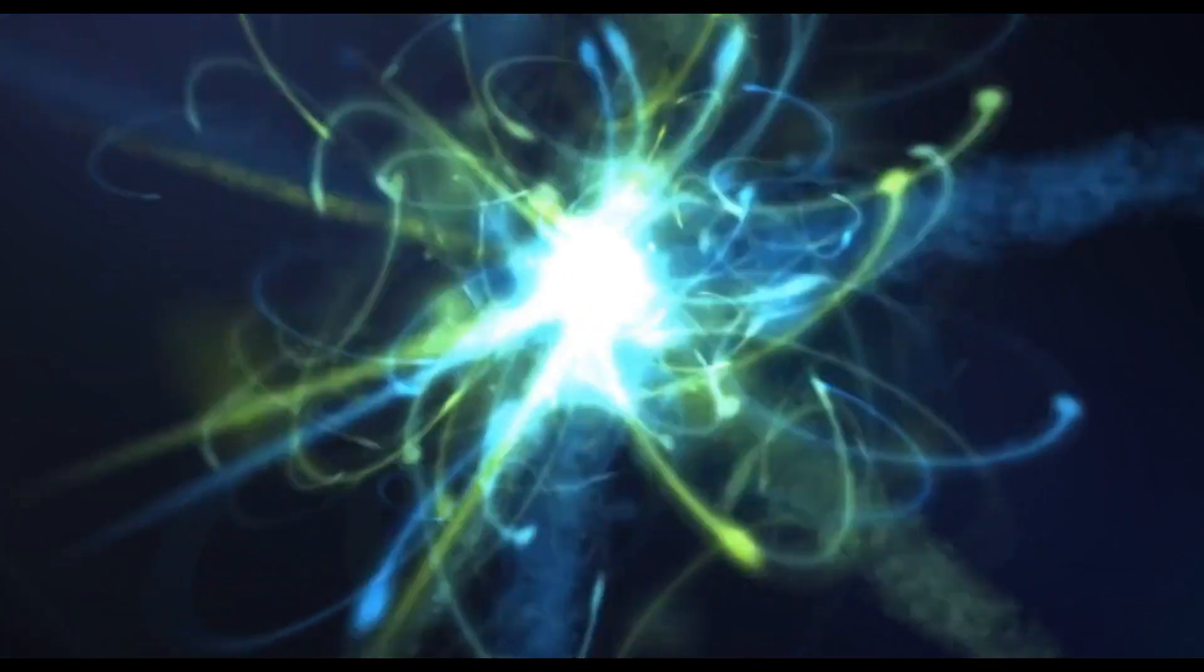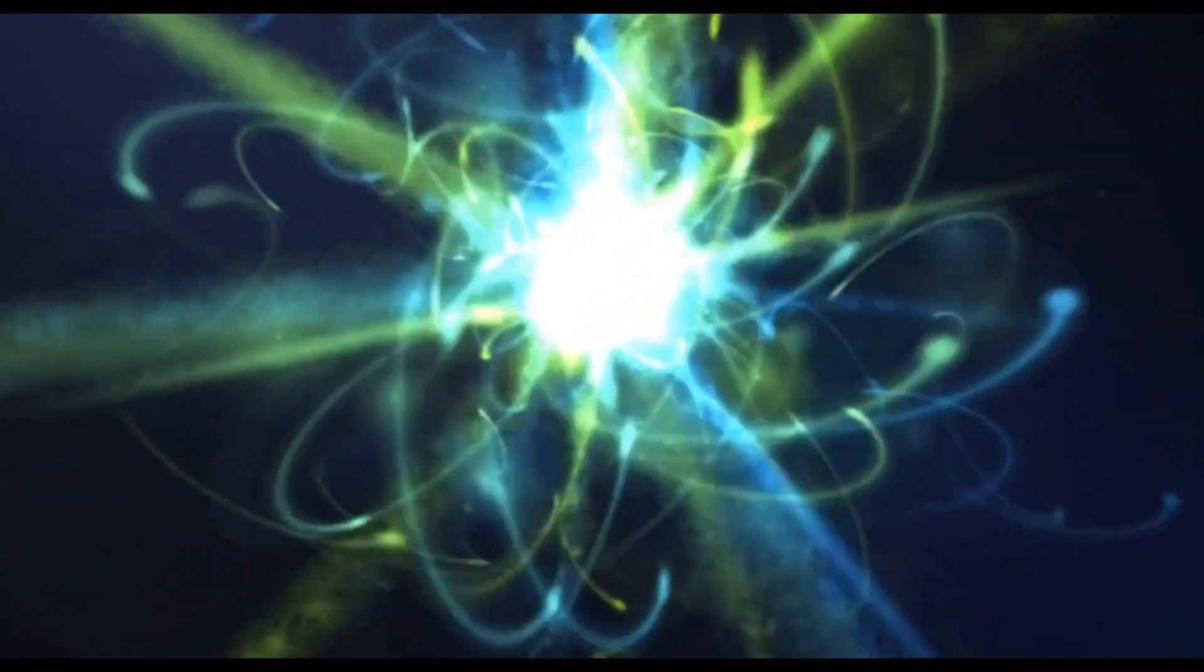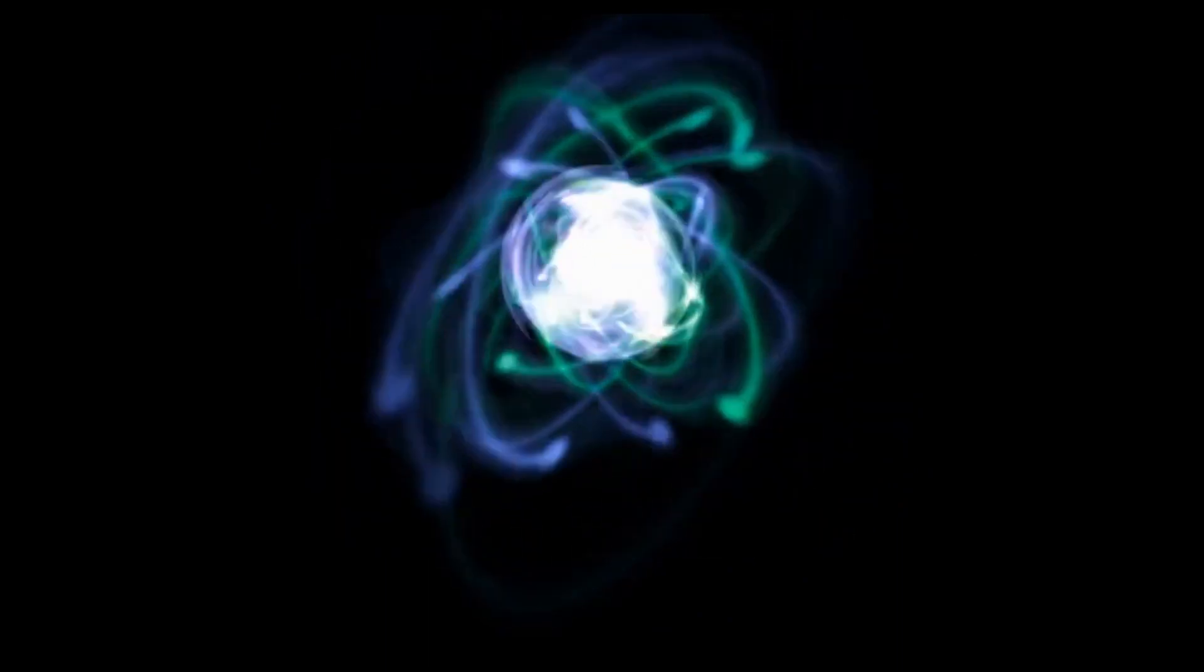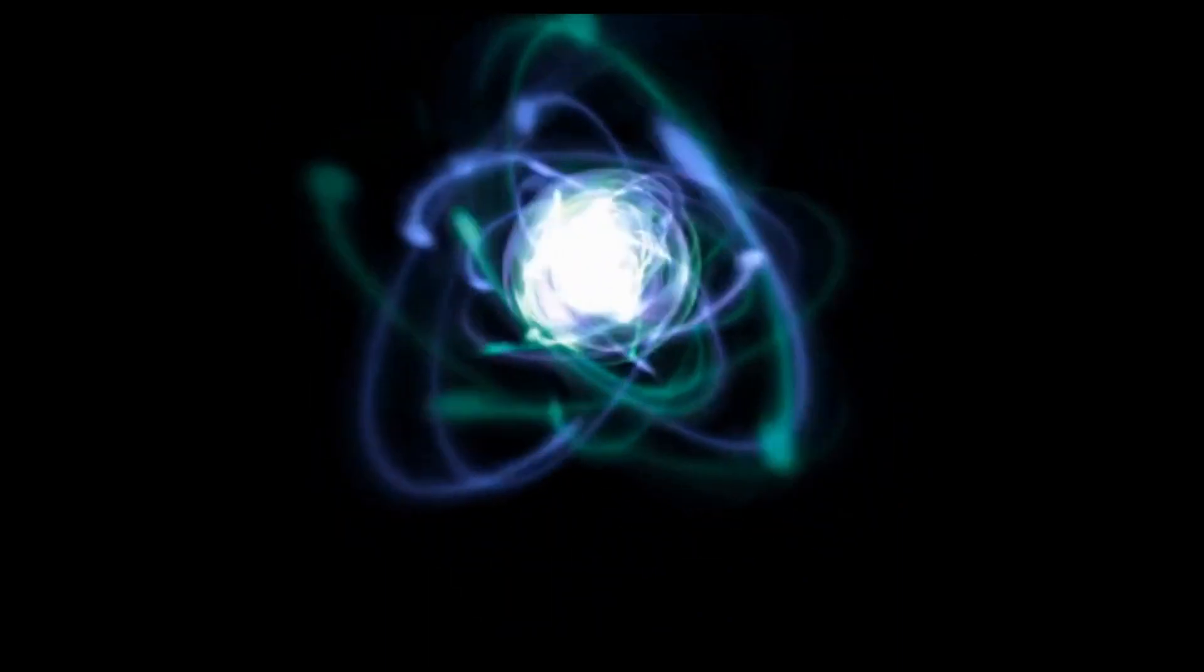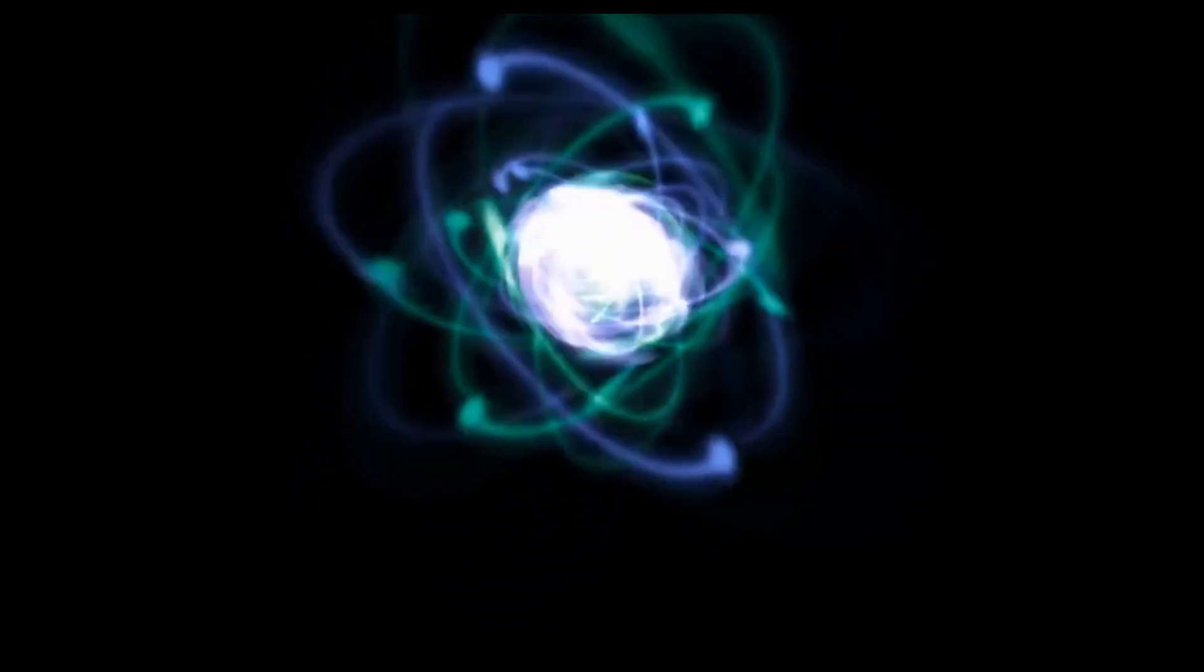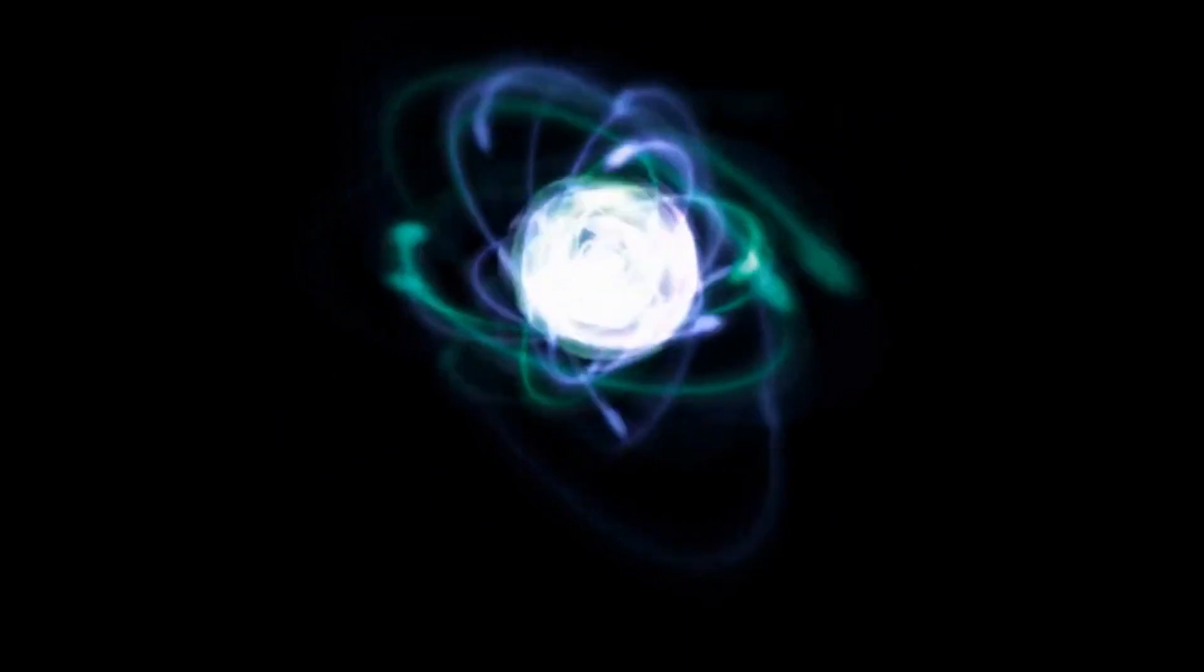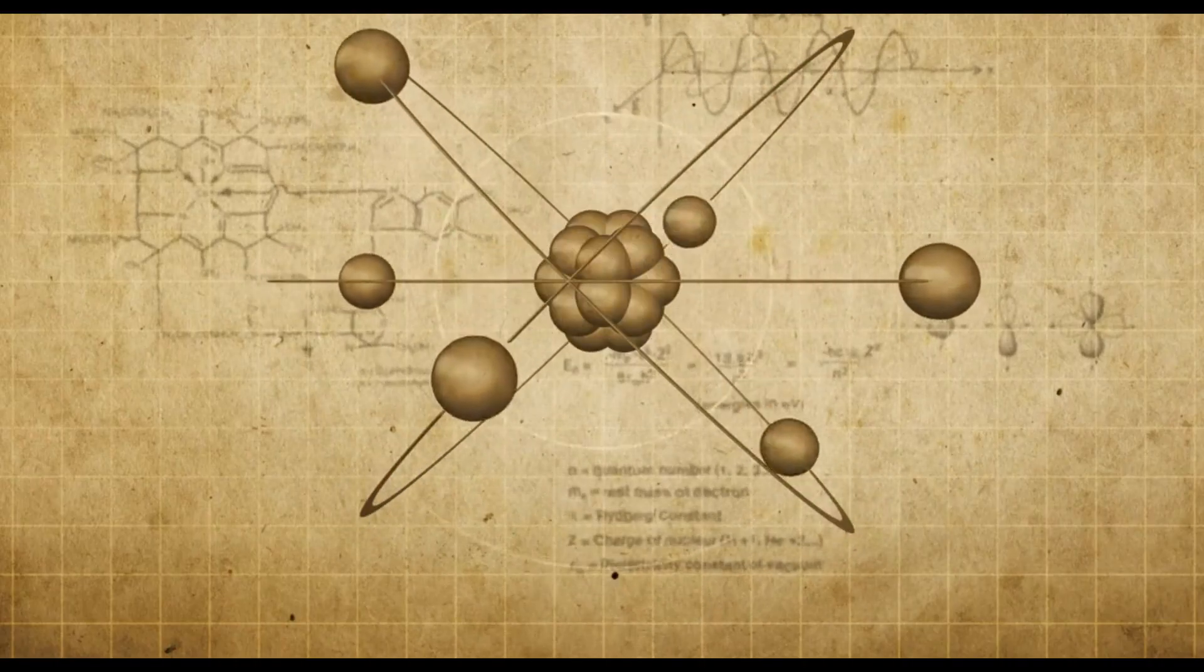However, there is a big difference between the spin of subatomic particles and the spin of ordinary objects. The spin of subatomic particles is not caused by any physical motion or rotation of the particles themselves. In fact, subatomic particles are considered to be point-like, meaning that they have no size or shape at all. So how can something that has no size or shape rotate? Well, the answer is, it can't.